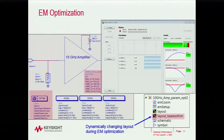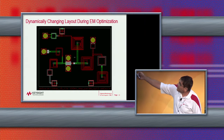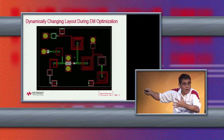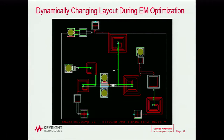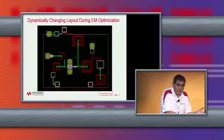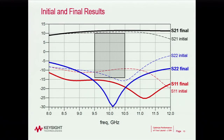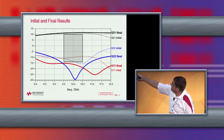Now it's running Momentum and optimizing simultaneously. A second layout is created automatically during the process — it does the meshing, the EM simulation, and the optimization. Notice how the layout changes every time it goes to a new optimization trial. You can see it meshing the circuit and trying to see if the goals are met. At the end of the process, the return loss shown in solid red and blue now meets my specs. This gives confidence because EM simulation accurately accounts for coupling, proximity effects, and everything. Here is my final gain, S11, and S22.